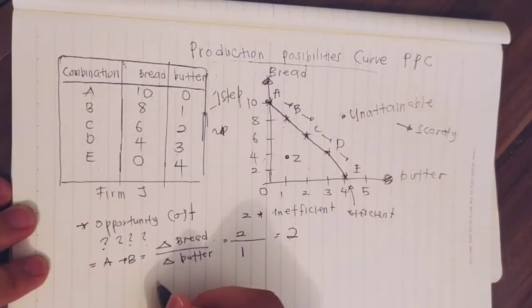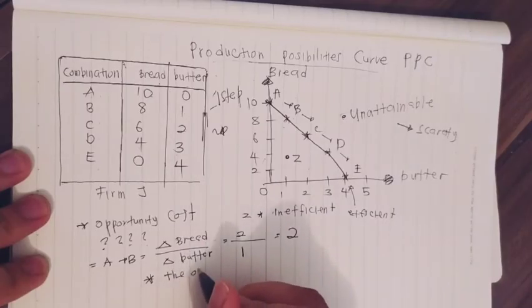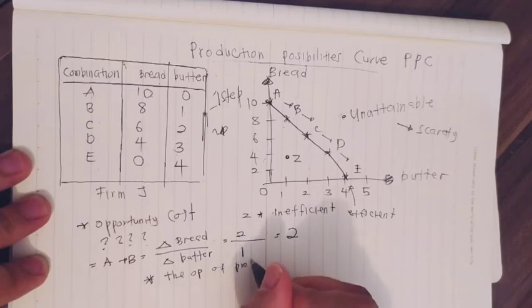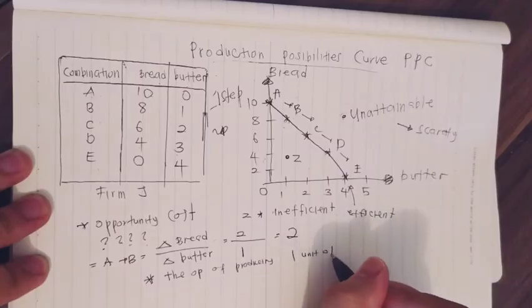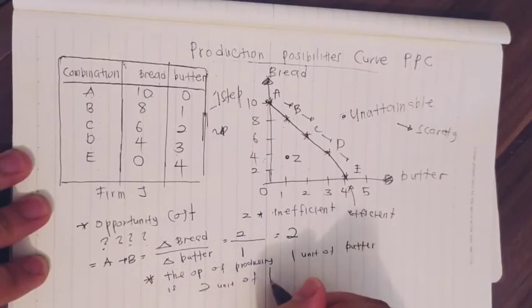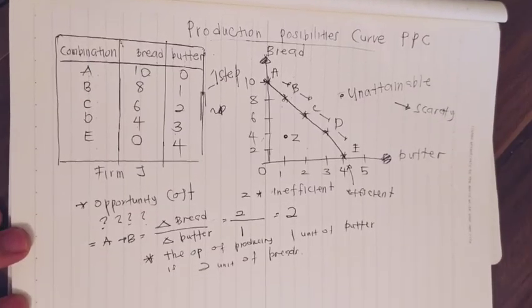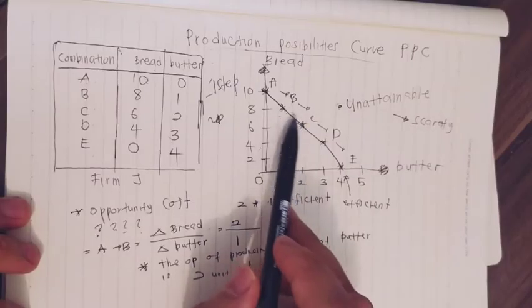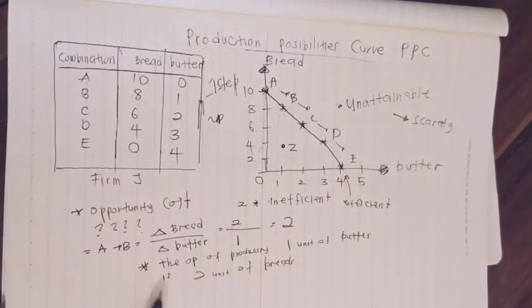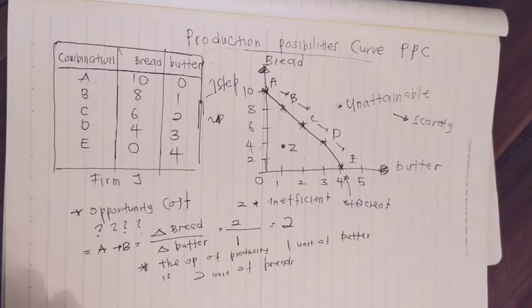So the opportunity cost is two divided by one, which equals two. We can conclude that the opportunity cost of producing one unit of butter is two units of bread. Similar calculations apply for each combination movement, such as B to C, C to D, and so on. That's all for this section — next we look at how the PPC moves due to factors like economic development and technology.